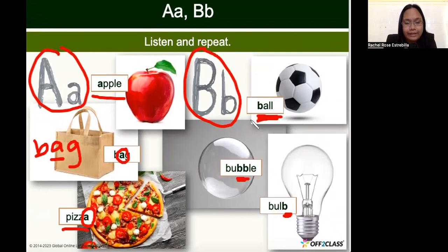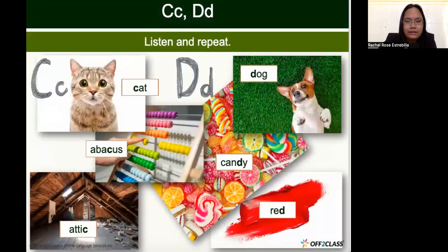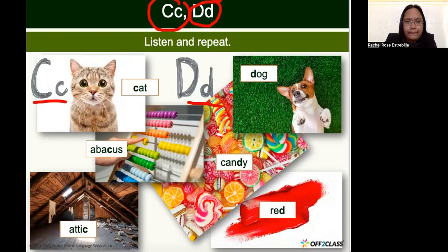This is going to be a long lesson. You don't have to finish watching the whole video in one sitting — you can take a break. We have 15 slides. This is letter A and B. Next we have letter C and D. Let's listen to the audio and then repeat after me: C — cat, abacus, attic. D — dog, candy, red.